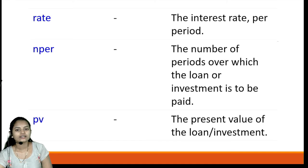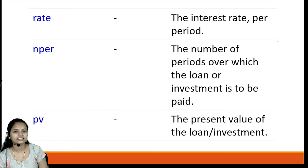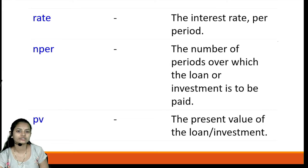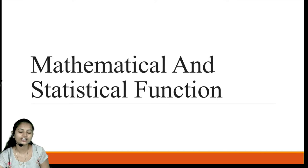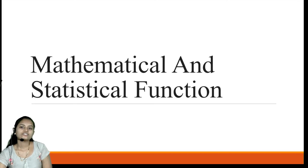To summarize PMT parameters: 'rate' is the interest rate, 'nper' is the number of periods over which the loan or investment is to be paid, 'PV' is the present value of the loan or investment, 'FV' is the future value, and 'type' is an optional parameter that specifies whether payment is made at the end or start of the period.